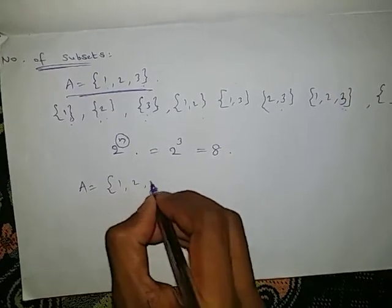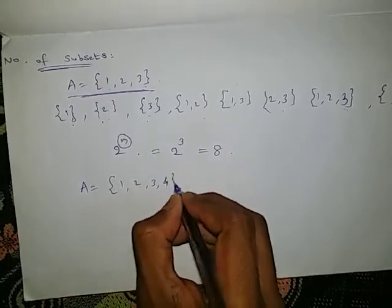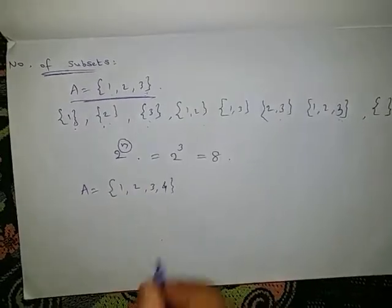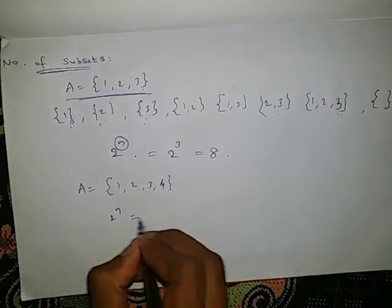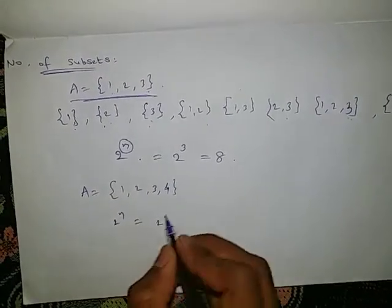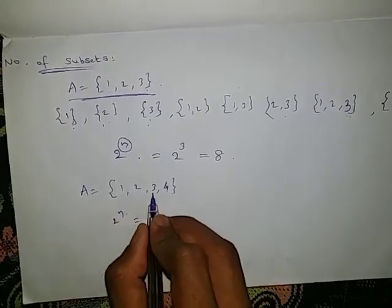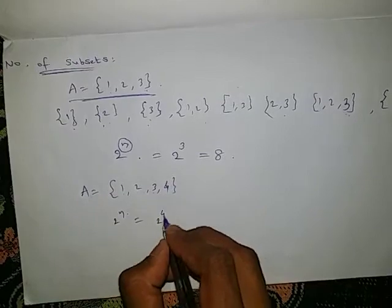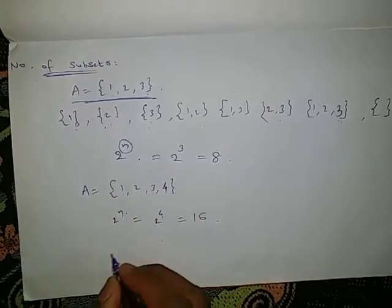Another example: A = {1, 2, 3, 4}. How many subsets will there be? Using 2 power n, n = 4, so 2 power 4 = 16 subsets.